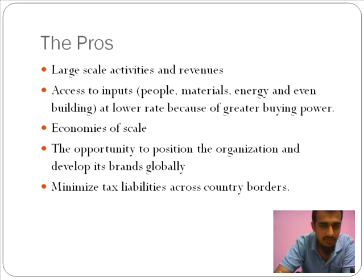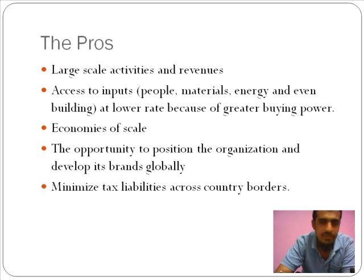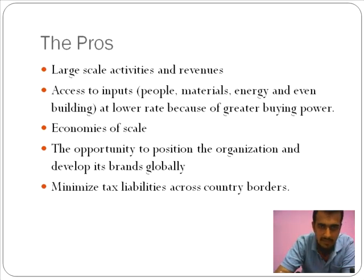Then, minimize tax liabilities across borders — a very good example for this would be Google. Google is predominantly into advertising. The main revenue for Google is always advertising. In order for me to put an advertisement on Google, it costs me 2,500 rupees per month for the basic package. Now, this money I'll be paying through credit card. The money from India, from Bangalore, is going to go all the way to Ireland — Google has got an office there in Ireland.